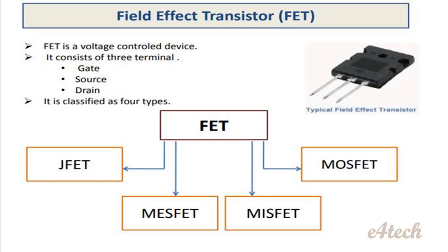The types of FET are: J-FET, MESFET, MISFET, and MOSFET. J-FET is a Junction Field Effect Transistor. MESFET is a Metal Semiconductor Field Effect Transistor. MISFET is a Metal Insulated Semiconductor Field Effect Transistor. MOSFET is a Metal Oxide Semiconductor Field Effect Transistor.